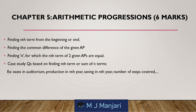Chapter 5: Arithmetic Progression — weightage 6 marks. Topics: finding the nth term from the beginning or end; finding the common difference of a given AP; finding n for which the nth terms of two given APs are equal; and case study questions based on finding the nth term or sum of nth terms — for example, seating in an auditorium, production in the nth year, saving in the nth year, number of steps covered, etc.